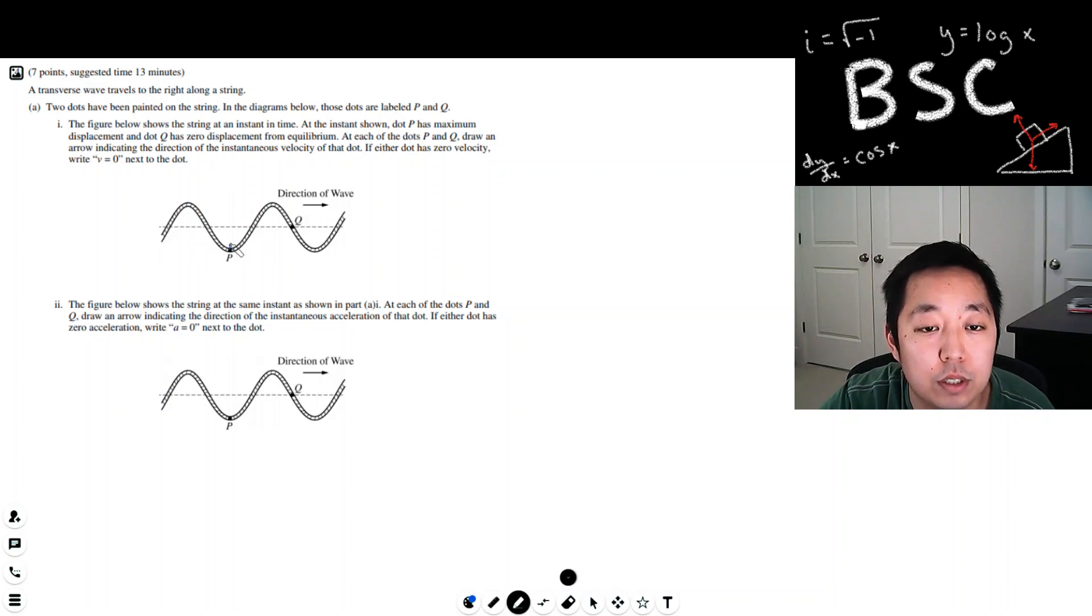So this guy is going up in this direction. The arrow just needs to be the direction. Now as this wave moves to the right, Q is going to go up too. So this is going to go like that.